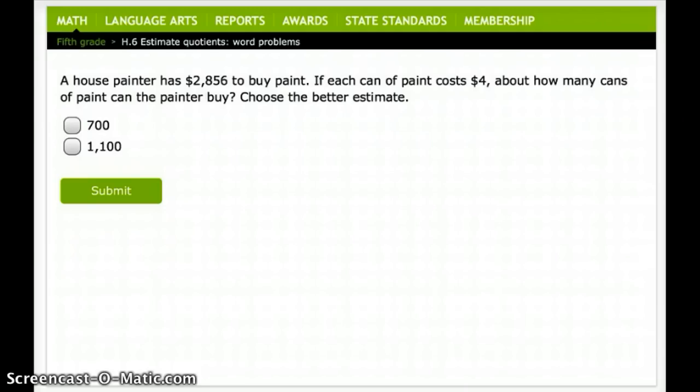All right. Next one. A house painter has $2,856 to buy paint. If each can of paint costs $4, about how many cans of paint can the painter buy? Make sure you do the UPS check. Bring in these two problems.